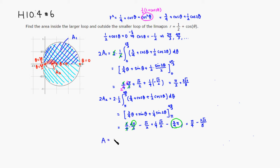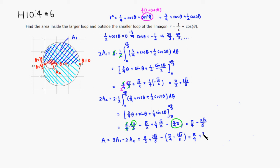The area we're looking for is 2A1 − 2A2 = (π/2 + 3√3/8) − (π/4 − 3√3/8) = π/4 + 6√3/8 = π/4 + 3√3/4. We can factor out 1/4 to write this as (π + 3√3)/4.